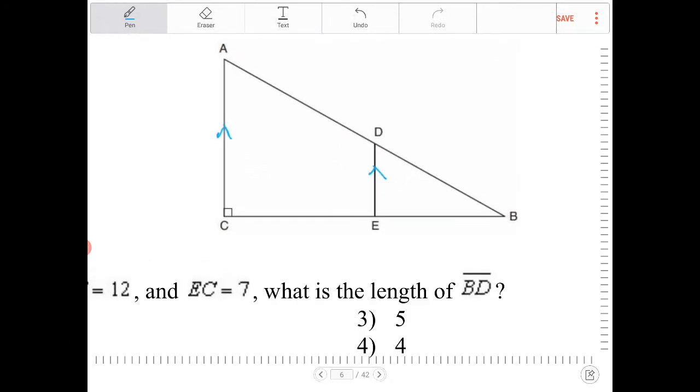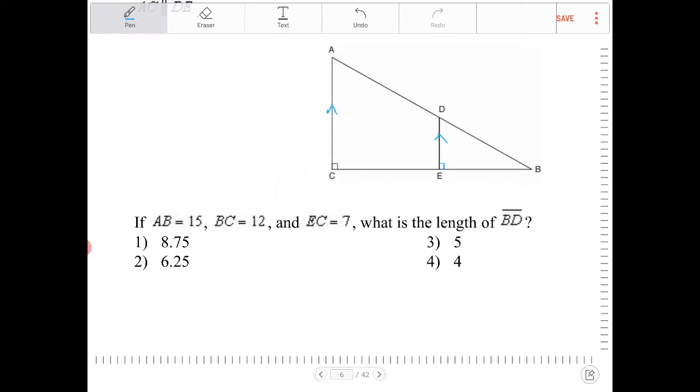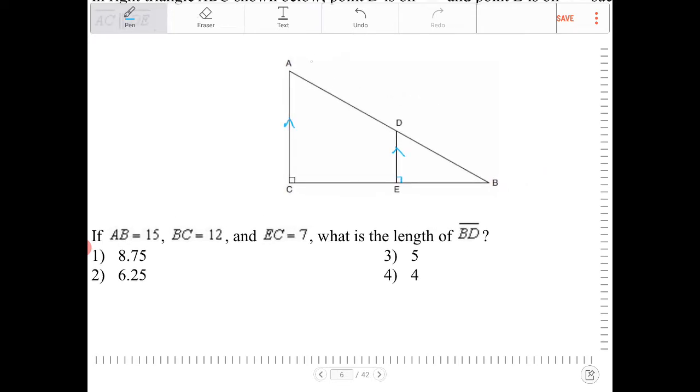We have a right angle there, so therefore this angle over here should also be a right angle. If AB is equal to 15, so AB this entire segment is 15. BC is 12, and EC is equal to 7.